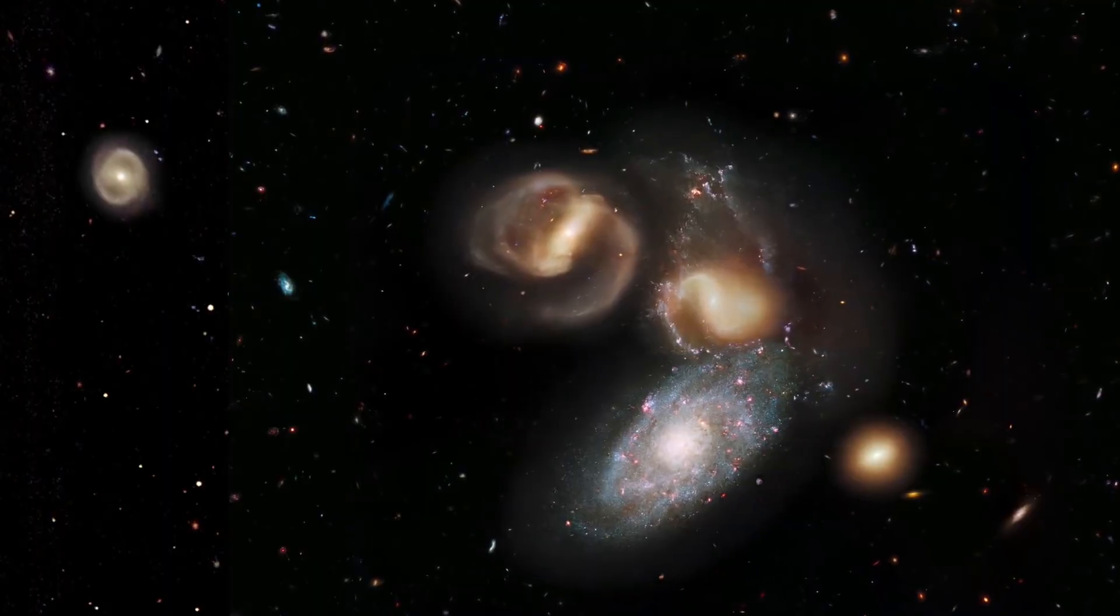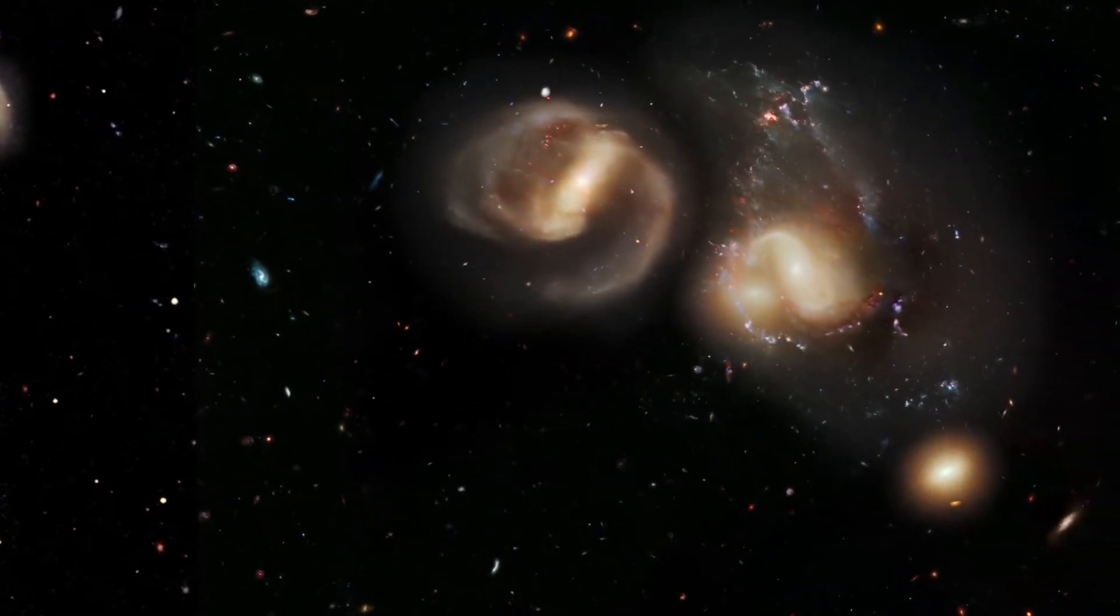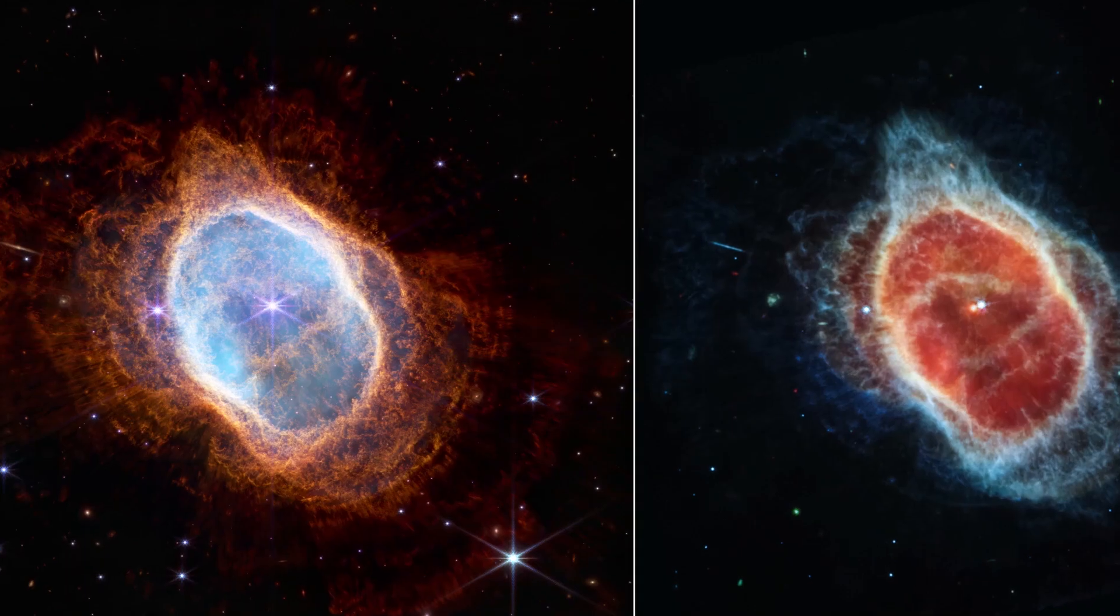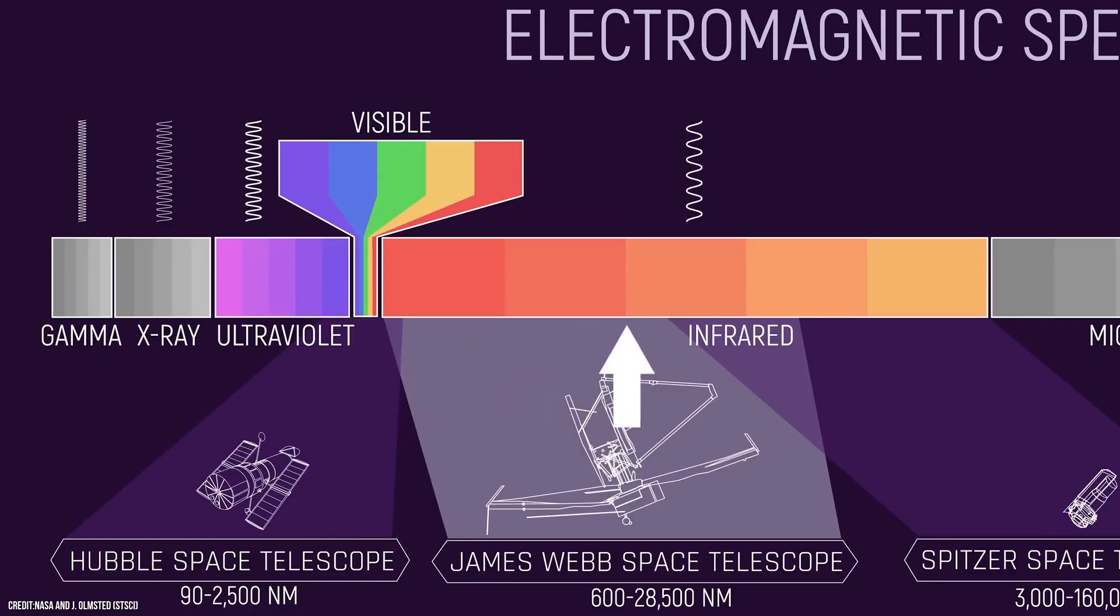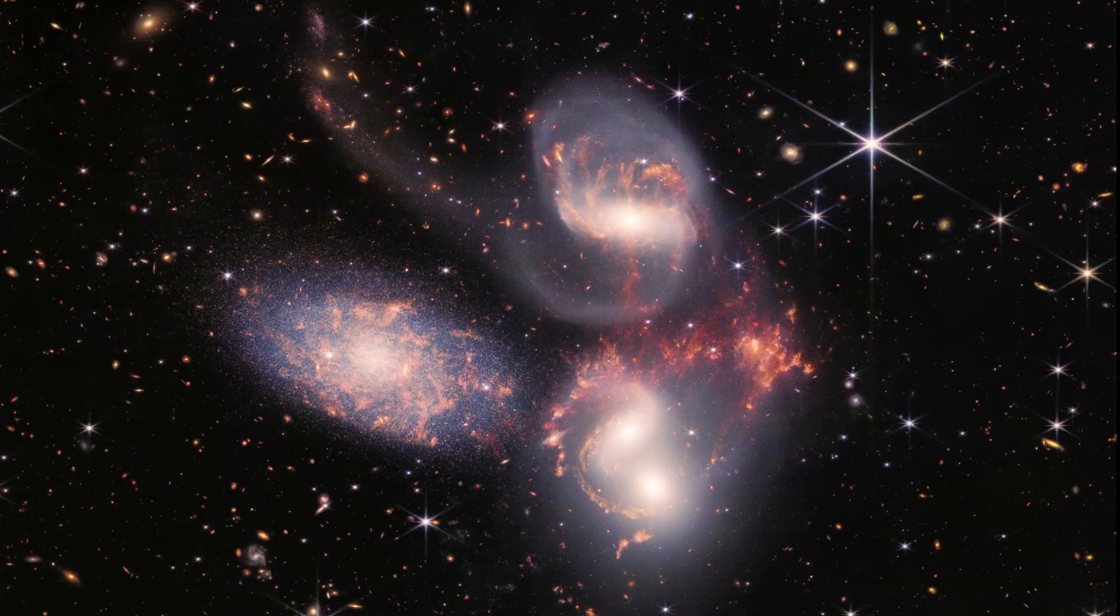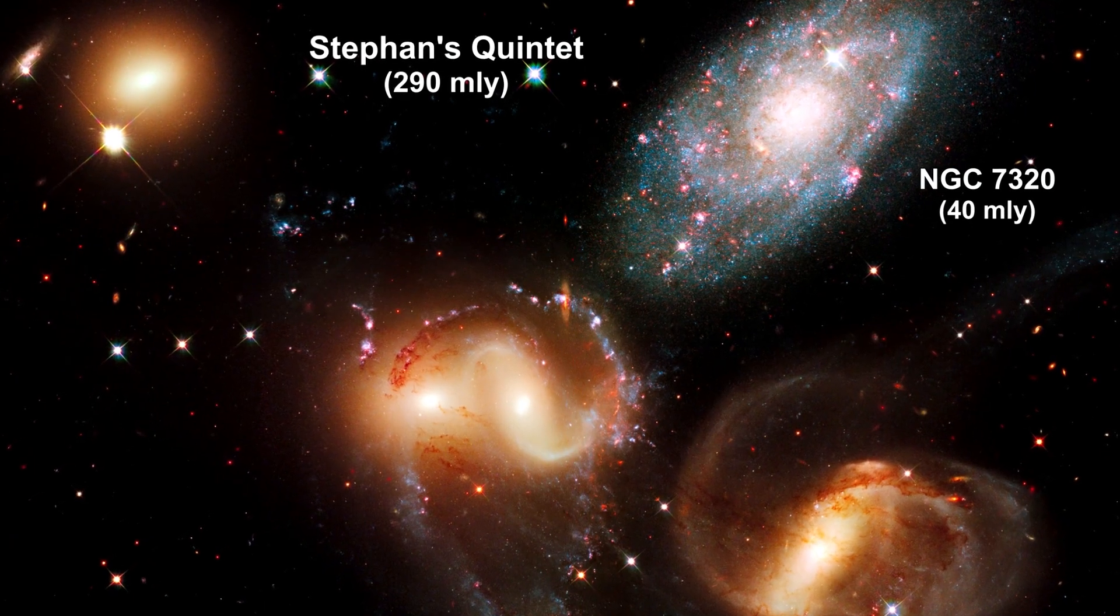For perspective, to make the final image, scientists paired 1,000 separate image files, which combined to produce over 150 million pixels. Just like the image of the Southern Ring Nebula, Stephens Quintet was captured by Webb's near-infrared camera, also known as NIRCam, and mid-infrared instrument, aka MIRI. And expectedly, the result is much more pleasing to the eye than we could have ever imagined.